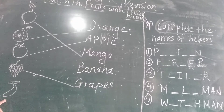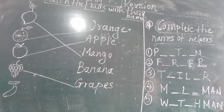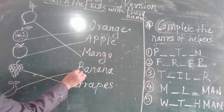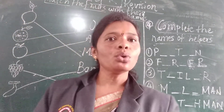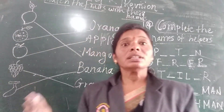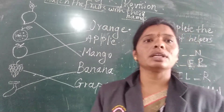This picture is of banana. B-A-N-A-N-A banana. You have to match like this. You have to learn the spelling and match accordingly.